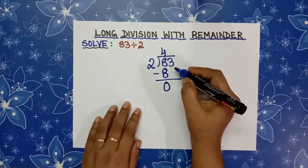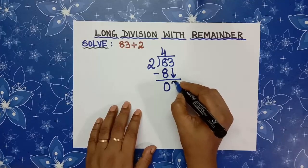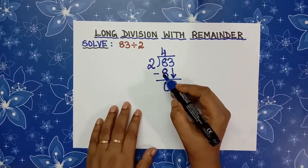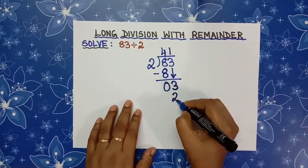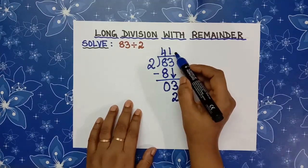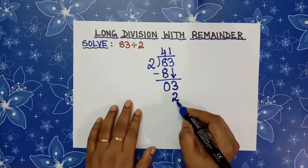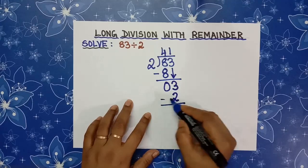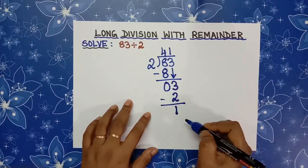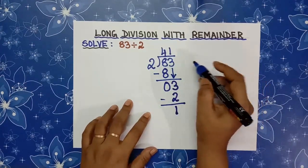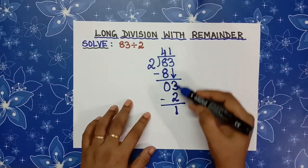Now the left out number in the dividend is 3. Bring it below next to 0. Now recite the two tables again. 2 goes into 3 one time. 2 ones are 2. Write 1 in the ones place above 83 and write 2 below 3. Now subtract 2 from 3. 3 minus 2 is 1. So we are getting 1. So 1 is remainder. Here 83 is dividend, 2 is divisor, 41 is quotient, and 1 is remainder.